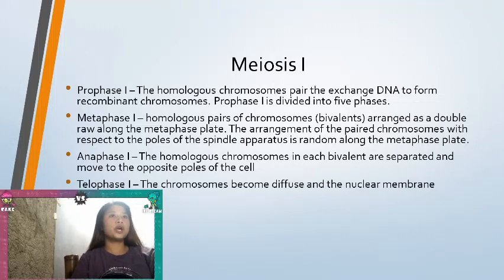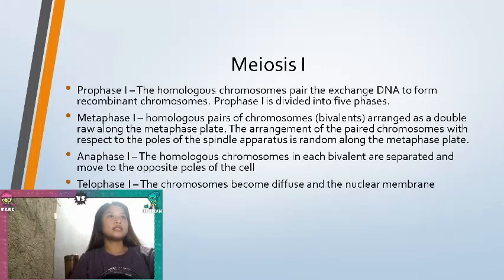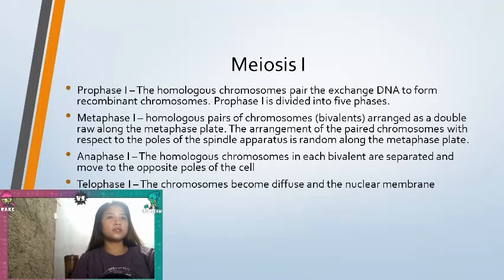The homologous chromosomes pair and exchange DNA to form recombinant chromosomes. Prophase I is divided into five phases. Metaphase I: homologous pairs of chromosomes, or bivalents, are arranged as a double row along the metaphase plate. The arrangement of the paired chromosomes with respect to the poles of the spindle apparatus is random along the metaphase plate.